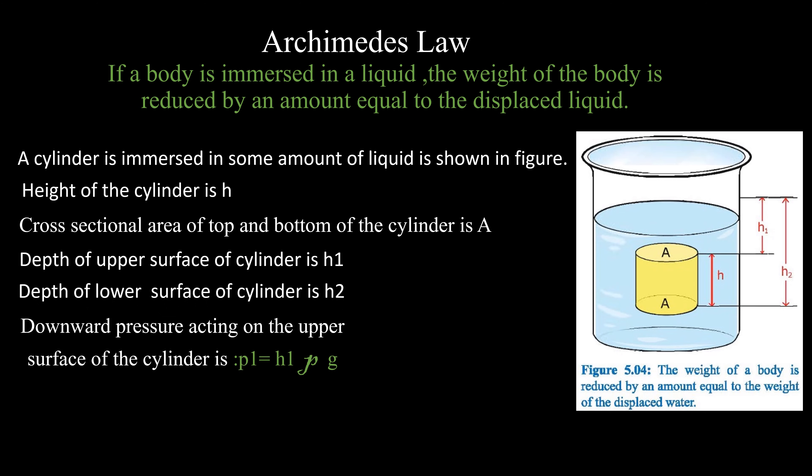We know downward pressure acting on the upper surface of cylinder is p1 equal to h1 rho g, and upward pressure acting on the lower surface of the cylinder is p2 equals to h2 rho g.